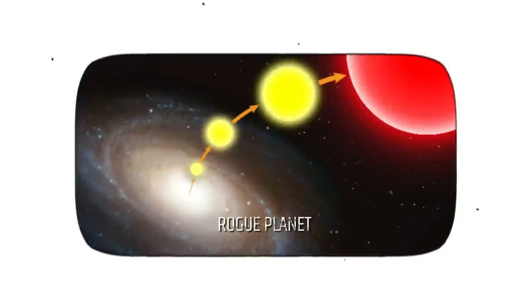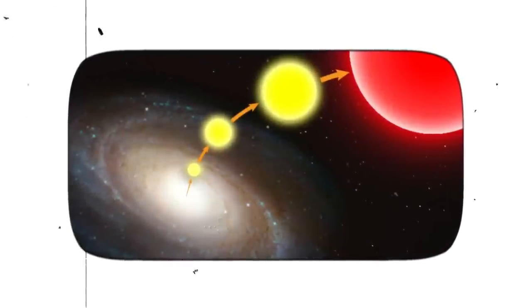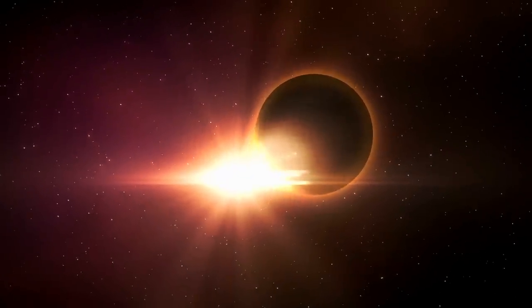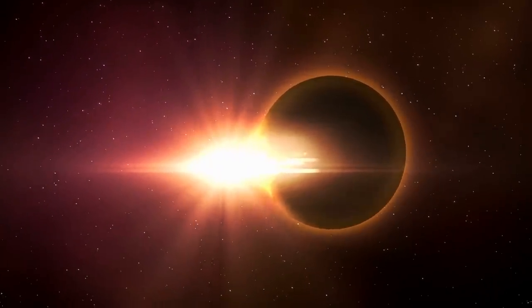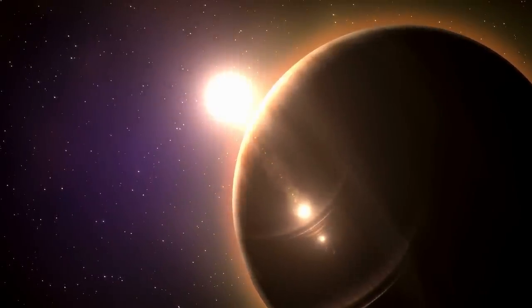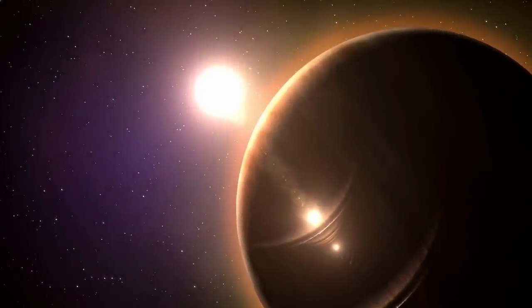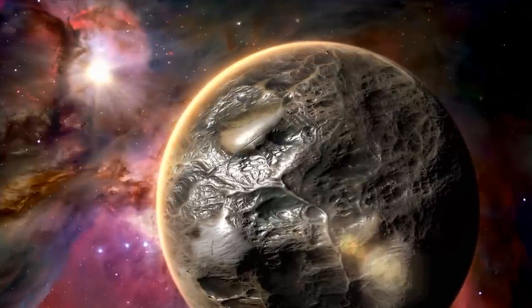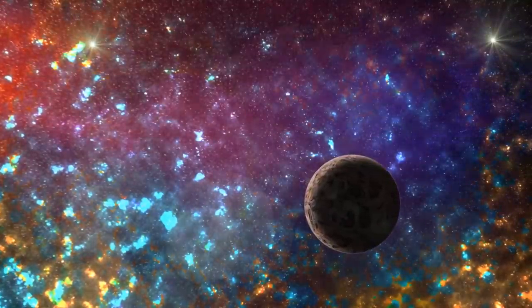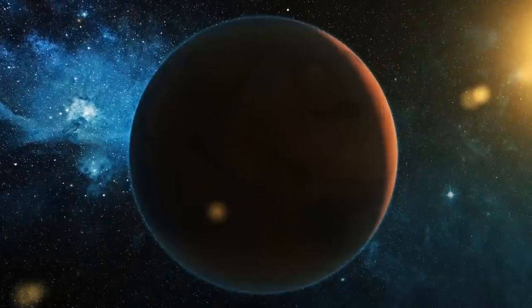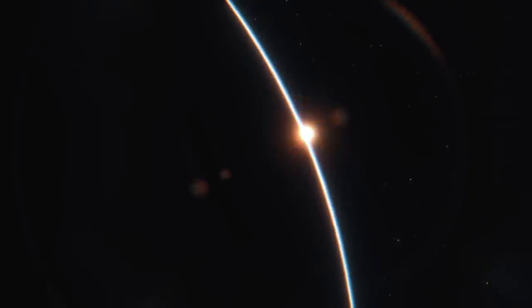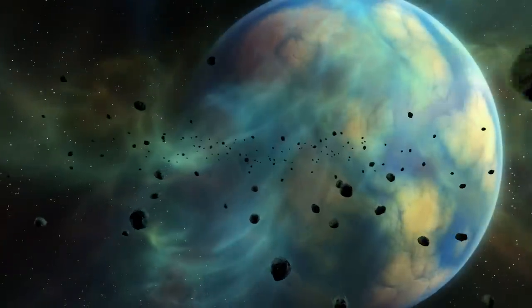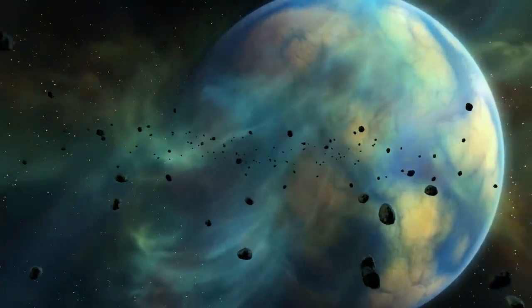Finally, a rogue planet, also known as an interstellar planet or an orphan planet, is a planet that does not orbit a star and instead drifts freely through space. It is estimated that there could be billions of rogue planets in our Milky Way galaxy alone. Despite the lack of a host star, rogue planets can still have atmospheres and may even have conditions suitable for life if they are close enough to a heat source. Some researchers have even suggested that life may have originated on a rogue planet and later traveled to habitable planets through interstellar space.